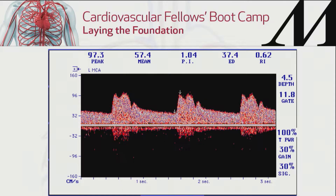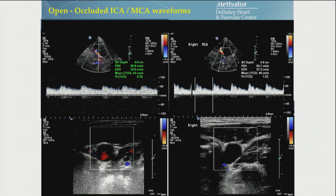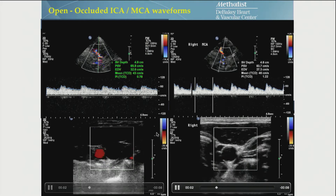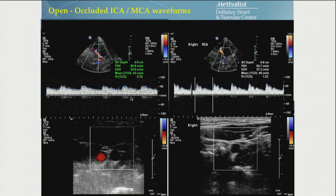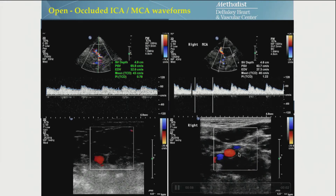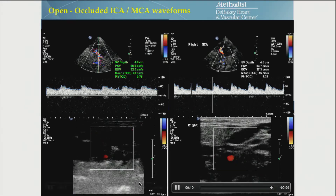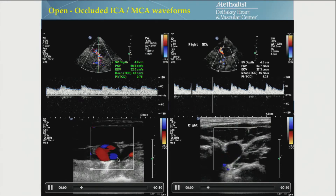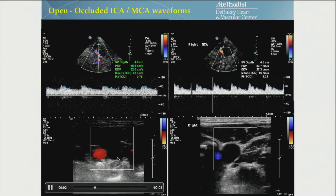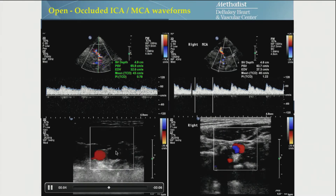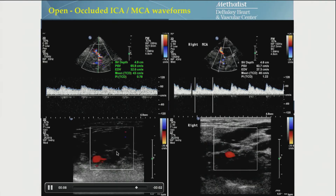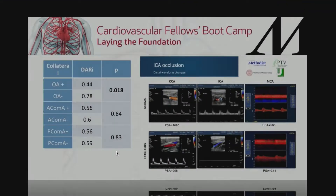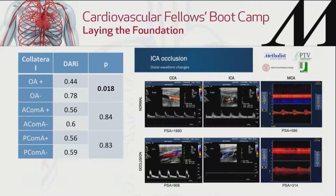Your second notch is your aortic valve closure. And the difference between these two signals — blunted middle cerebral artery flow versus a good systolic upstroke — tells you whether your carotid artery is open or occluded. Sometimes you see no flow because there's a dissection further up, and this is why the flow can't get in. We just love the waveform, and we like to map our collaterals.